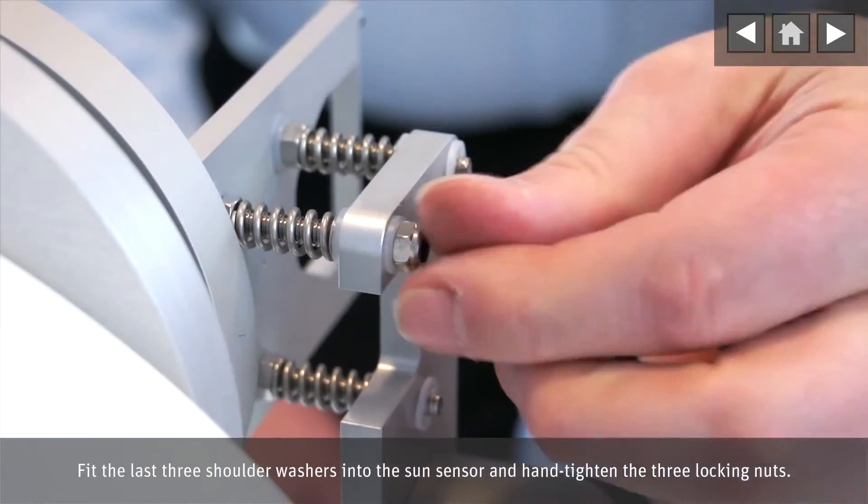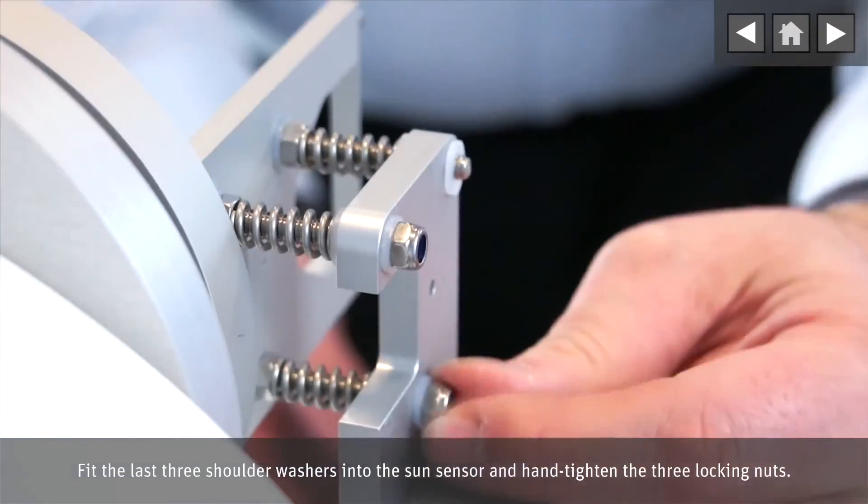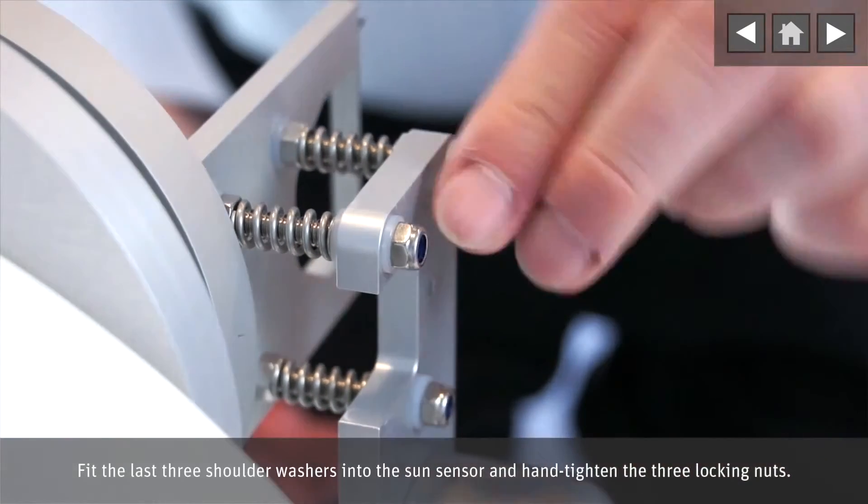Fit the last three shoulder washers into the Sun sensor and hand tighten the three locking nuts.